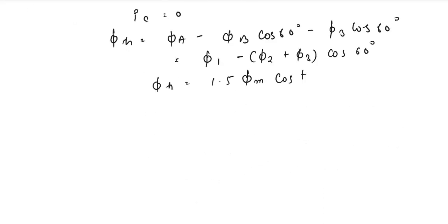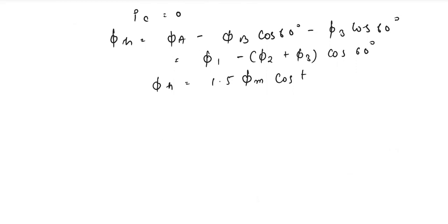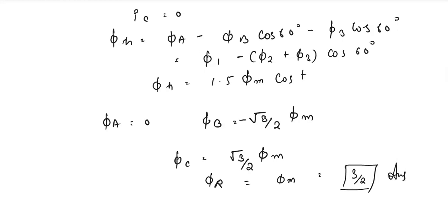So what will be the magnitude formed when the value of phi A is equal to 0? Then phi B is equal to negative root 3 by 2 times phi M. The value of phi C is equal to root 3 divided by 2 phi M, and the value of phi R will be equal to phi M, that is 3 by 2, and we can write this is our final answer.